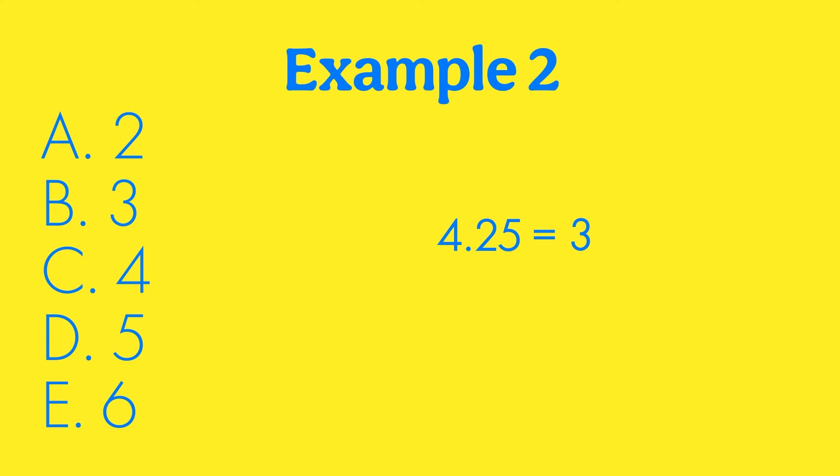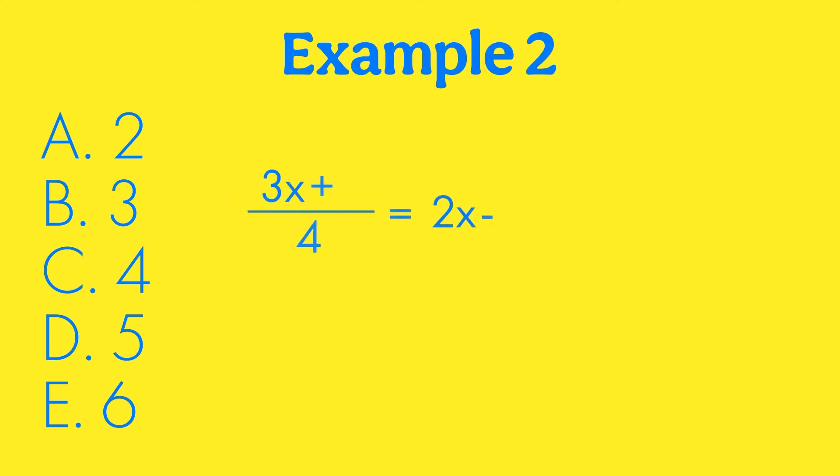We're going to go to choice D, which is five. If we plug in five, we get three times five, which is 15 plus five, which is 20 divided by four, which gives us five. So we have five for that side. And then on the other side, we have two times five, which is 10 minus five, which is five. So then we have five equals five. So that is the correct answer for our question. And we got that without doing any math. We just got it by plugging in numbers and using our calculator.